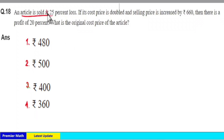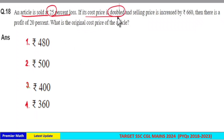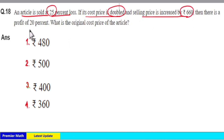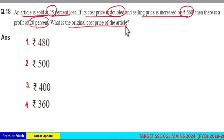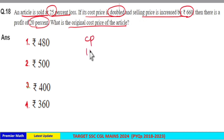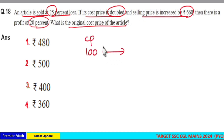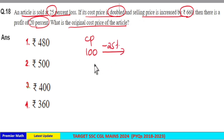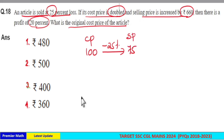An article is sold at 25% loss. If its cost price is doubled and selling price is increased by rupees 60, then there is a profit of 20%. What is the original cost price of the article? Consider the original cost price of the article as 100 rupees. This article is sold at a loss of 25%, meaning 100 minus 25 = 75 rupees is the initial selling price.